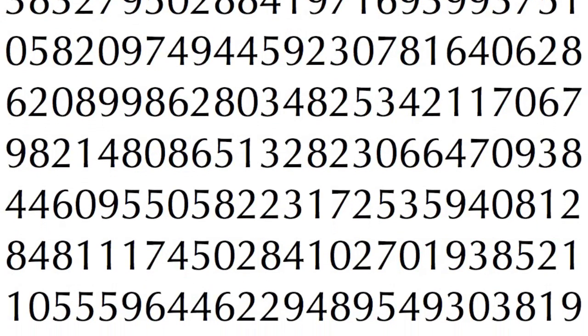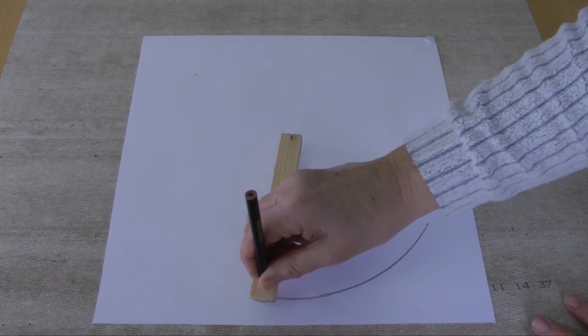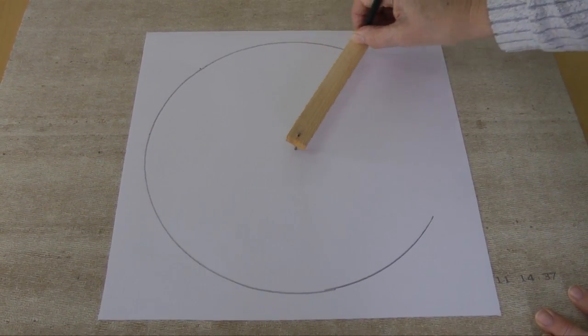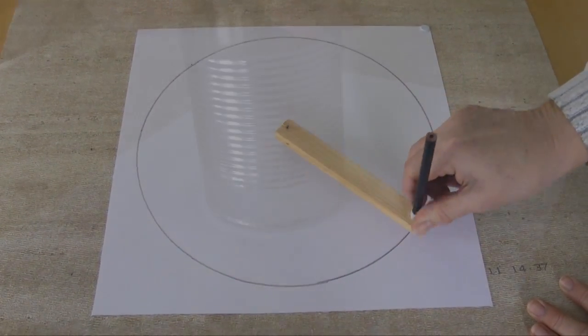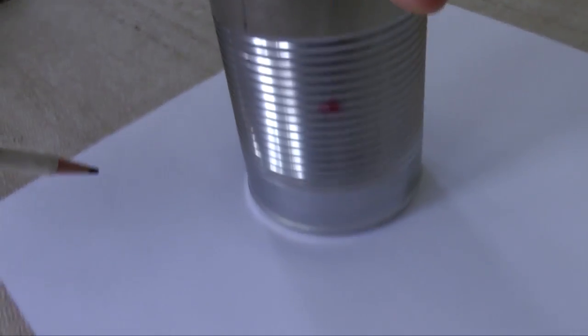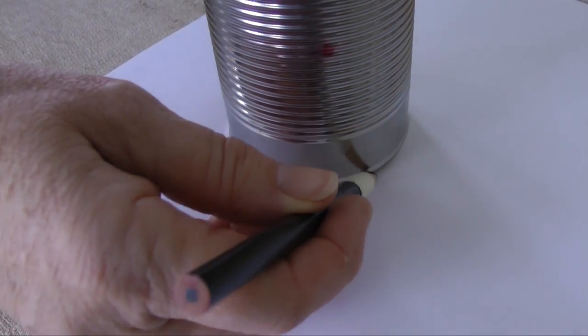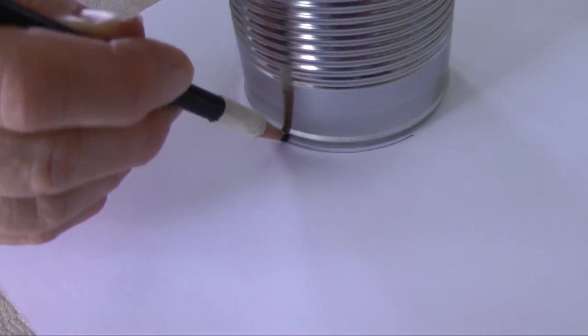It is, after all, an irrational number. There are numerous ways to calculate pi. Here are two. This method requires simply measuring the diameter and circumference of a circle. Use a circular can and trace a circle.